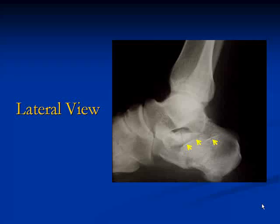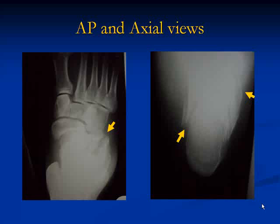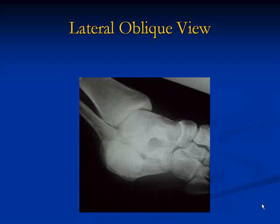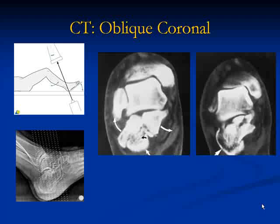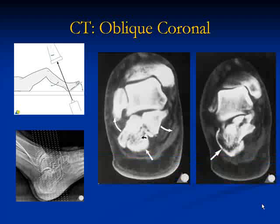The lateral view can show the depressed articular surface. The axial view can show a fracture line running from anterolateral to posteromedial. For those who don't have a CT, an oblique view will show the sustentaculum tali and the fracture line running from anterolateral to posteromedial. On CT, the best view is the oblique coronal, which shows the different fragments, their displacements, and helps you plan how to reduce and fix the fracture.